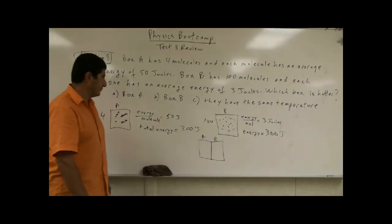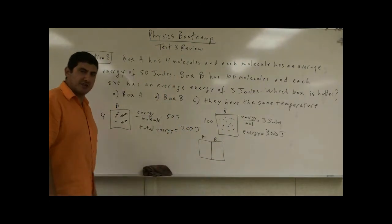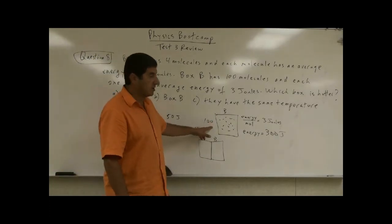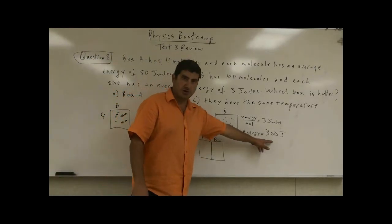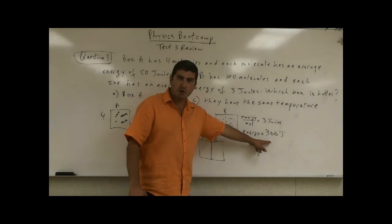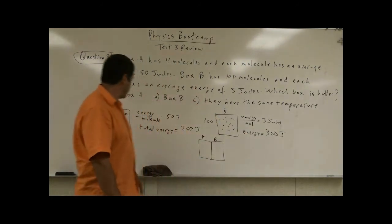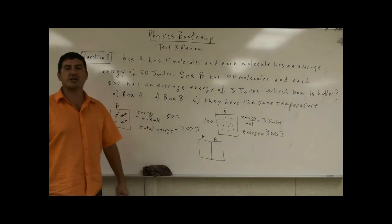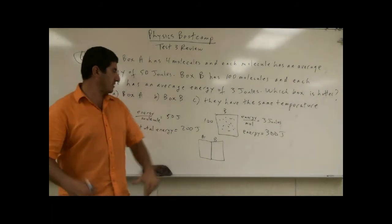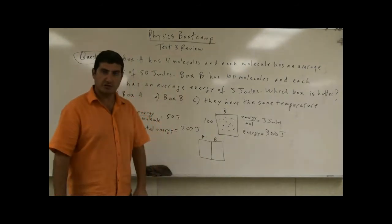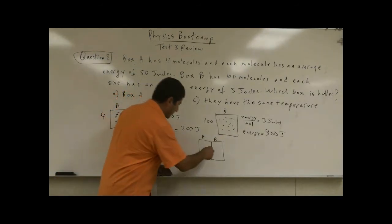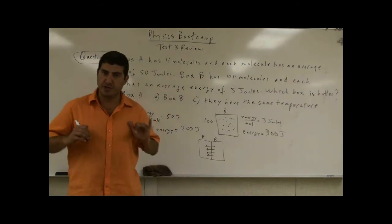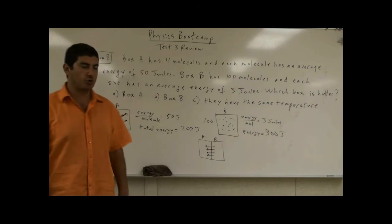So the unsuspecting person is going to say, well, this box has 100 molecules, each one 3, 300 joules. It has more total energy. This one, total energy, 200. Therefore, that has more energy. So a lot of people might say box B is hotter. And since box B is hotter, the direction of the heat flow will be this way. Heat will flow from the hotter box to the colder.